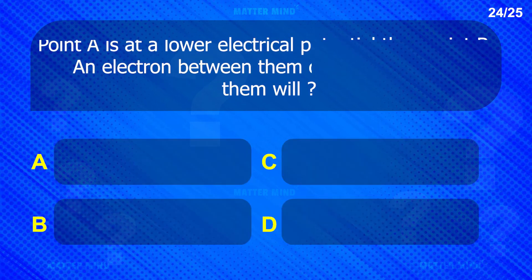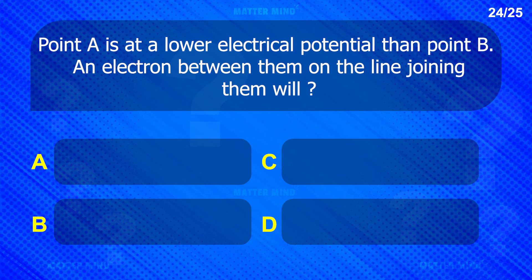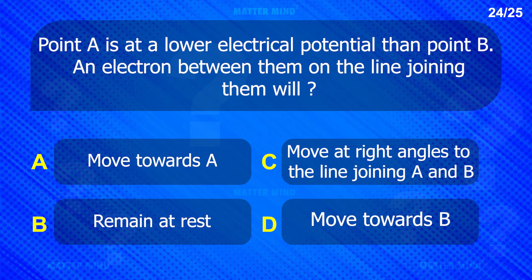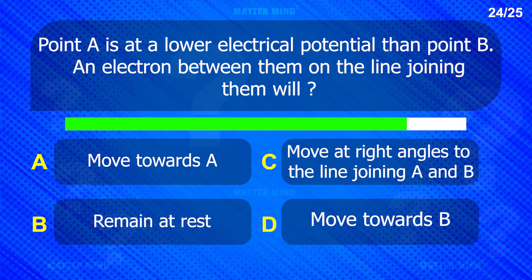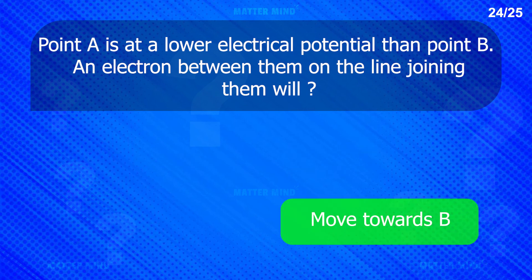Point A is at a lower electrical potential than point B. An electron between them on the line joining them will move towards B.